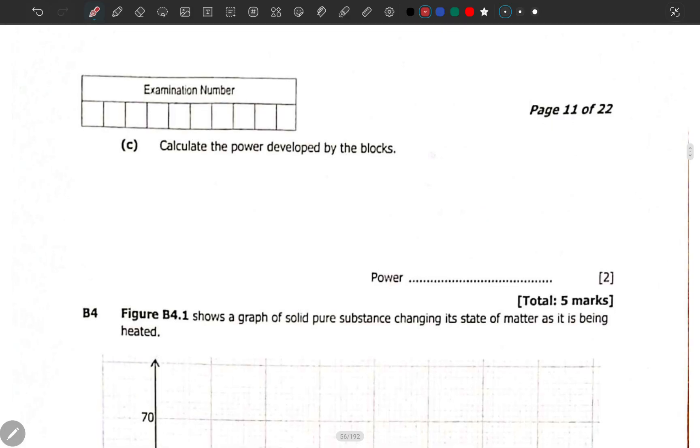Calculate the power developed by the blocks. Well, what is power? Power is work done divided by time taken in doing work. Therefore, the work done is 120,000 joules.